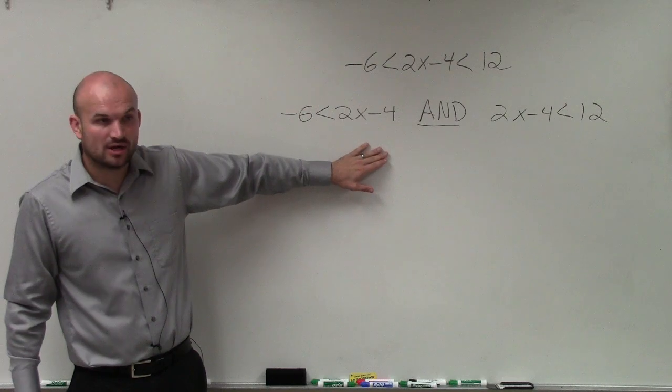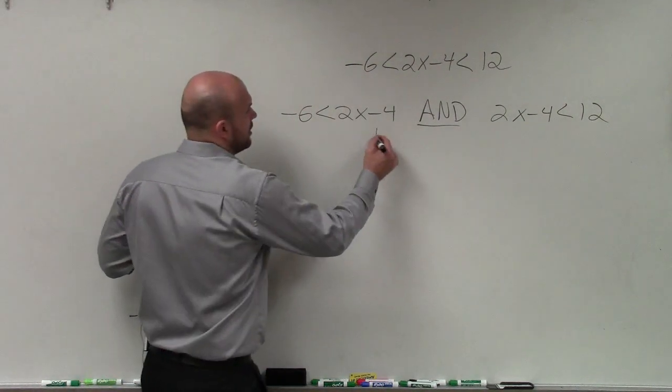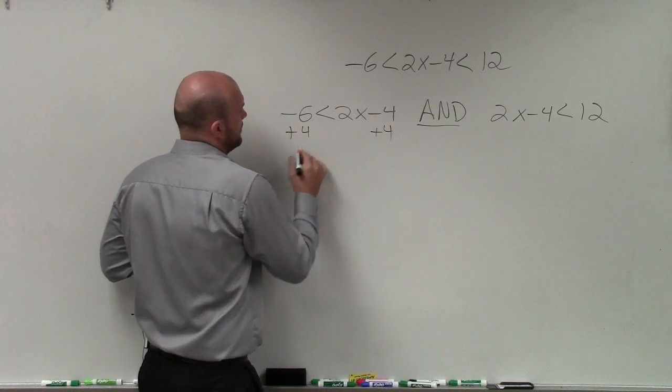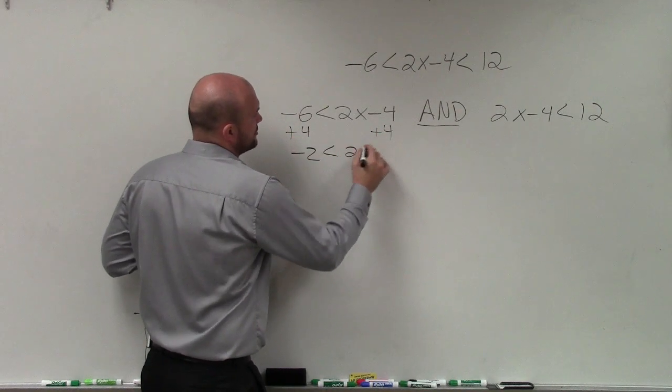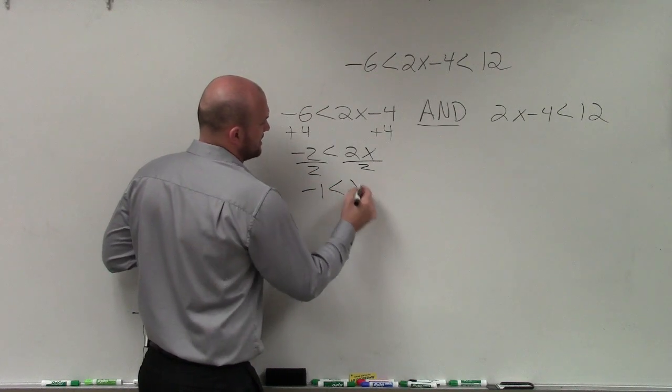Now I have two inequalities. And I solve them just like we did last class period. I'll add 4 here, add 4, negative 2 is less than 2x. Divide by 2, divide by 2, negative 1 is less than x.